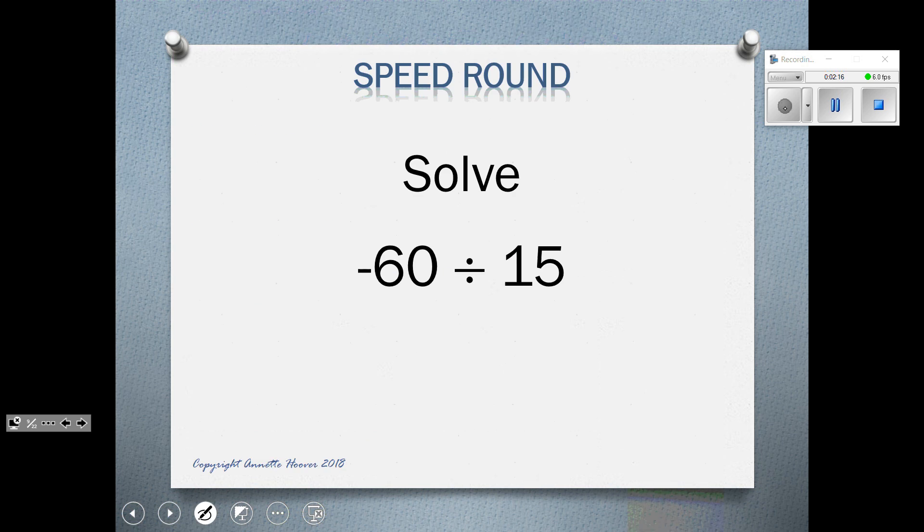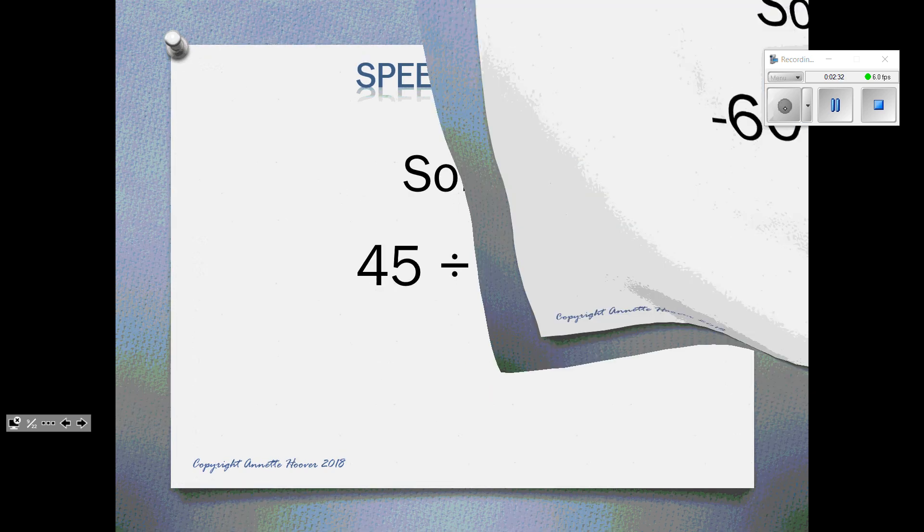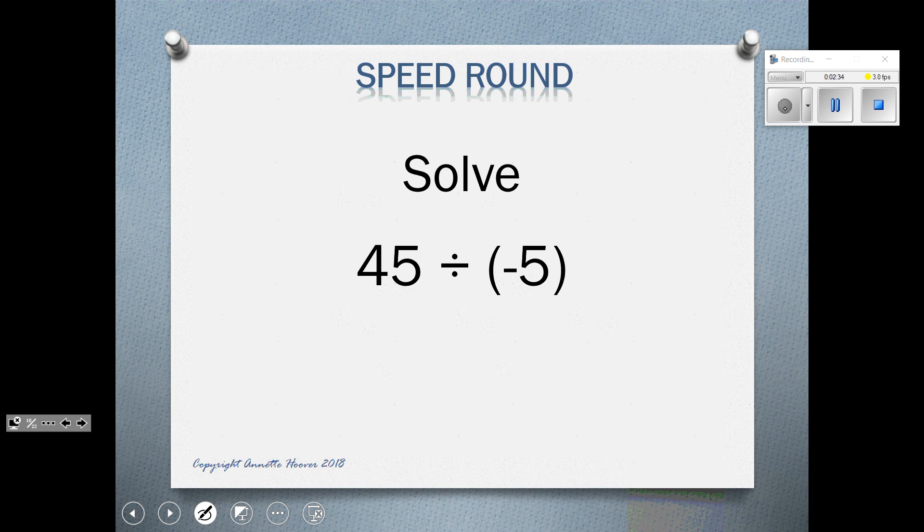Here's the speed round. I will give you a couple seconds to think about what you think the answer would be, and then we will reveal the answer as you check it. Negative 60 divided by 15. Negative 4. 45 divided by negative 5. There is one negative, negative 9.